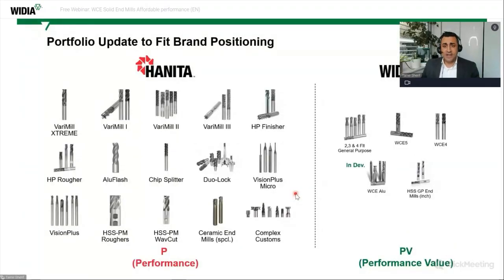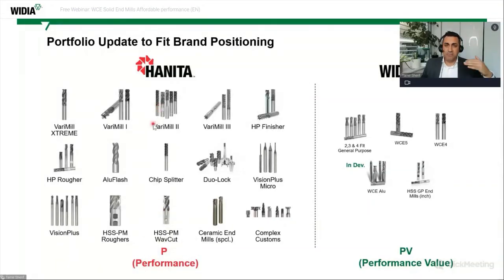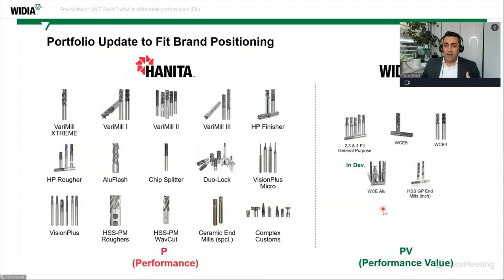Let's start with the first slide, which helps you understand the positioning of two brands. On the left side we have the Hanita brand — the high-performance brand, indicated by the red 'P' for performance. Hanita covers special application and material areas, including chip splitter versions and ceramic end mills. On the right side, the Video brand covers general purpose tools — HSS tools and the WC4 and WC5 — positioned as 'PV': performance value.